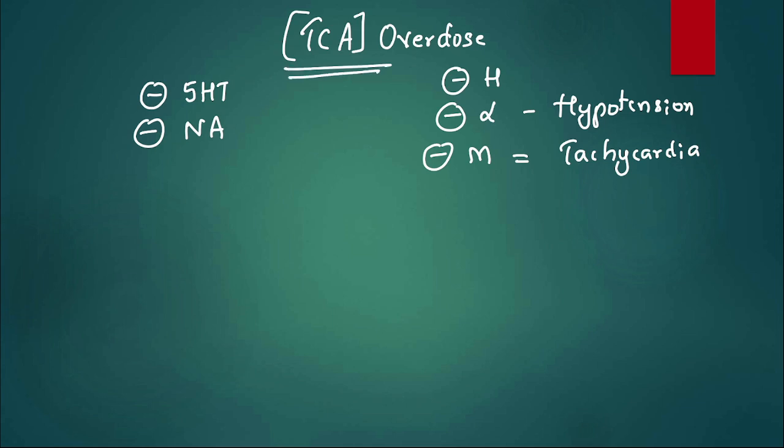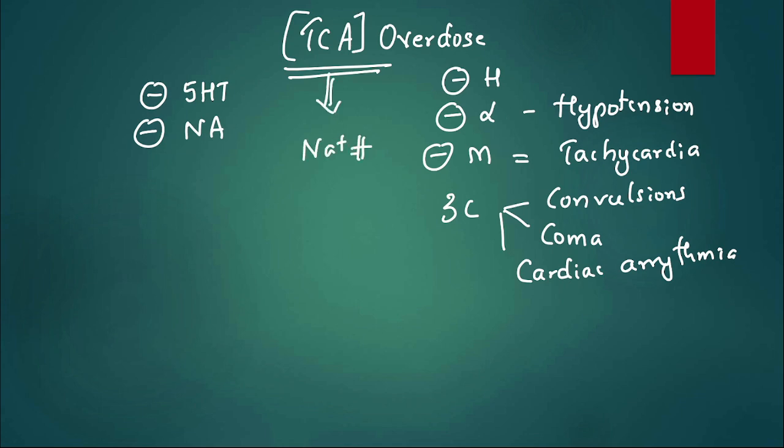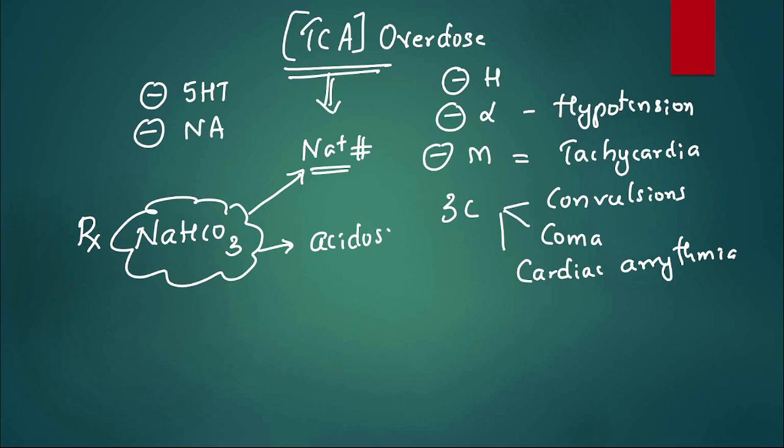Remember, TCA overdose, similar to atropine, can cause three C's: convulsions can happen, patient may have coma episodes, and cardiac arrhythmias can happen. TCA itself is a sodium channel blocker at high dose, like class 1 antiarrhythmics. The treatment for this overdose is sodium bicarbonate. If we give sodium bicarbonate, two things will happen: this sodium channel blockade caused by TCA can be overcome and we can prevent arrhythmias. Second, it can manage the acidosis which is seen in overdose.